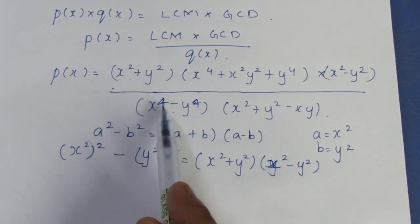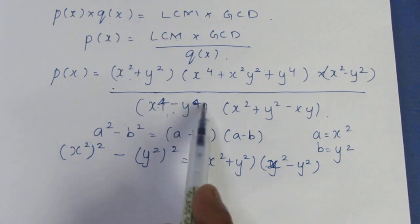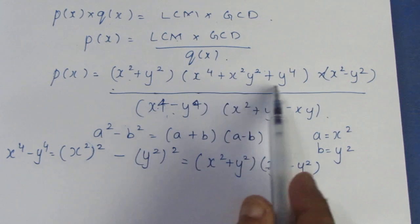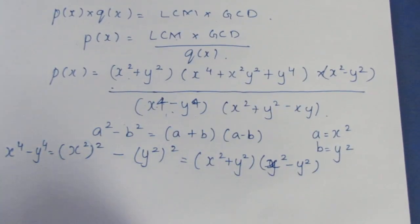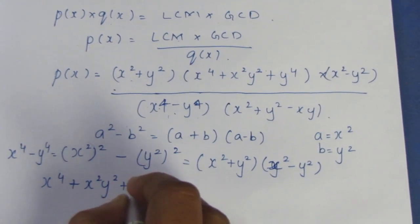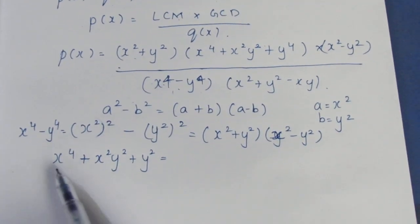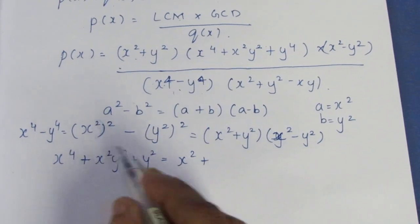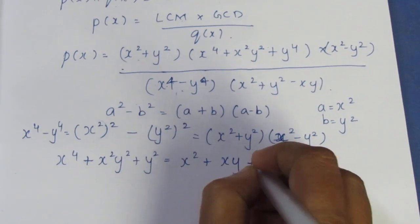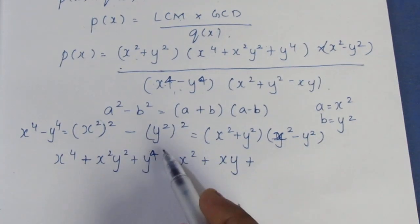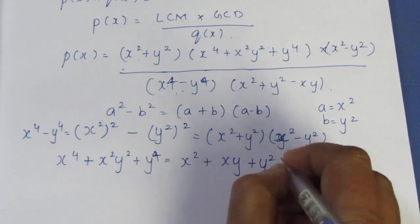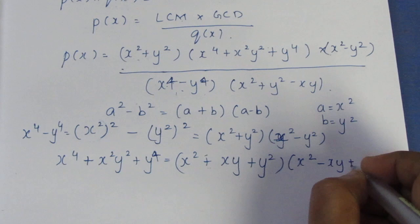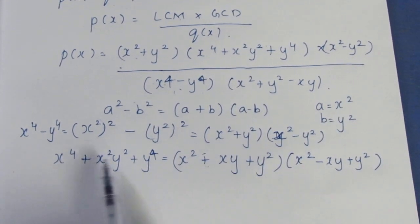Using the a² minus b² formula, we split and cancel terms. x⁴ minus y⁴ factors appropriately. We apply the difference of squares and simplify. x⁴ minus y⁴, x² minus xy plus y² are used in cancellation.